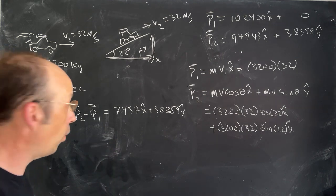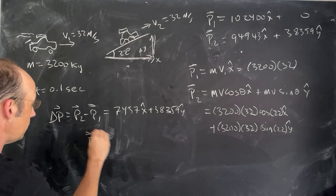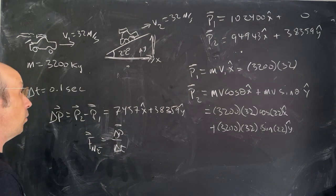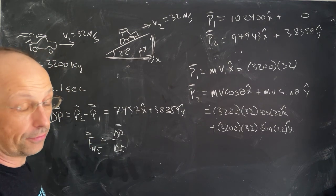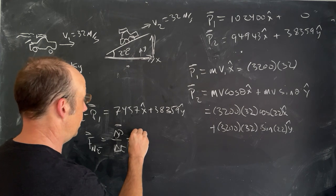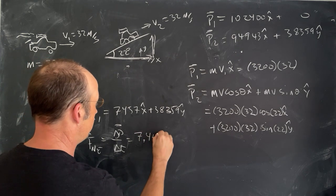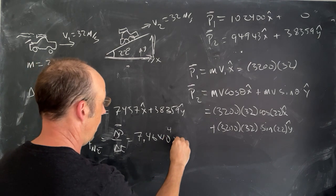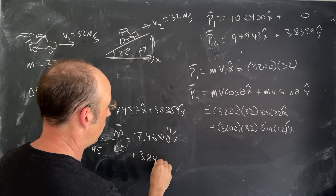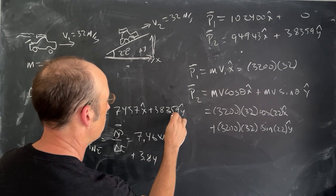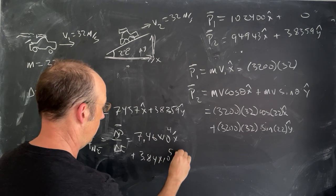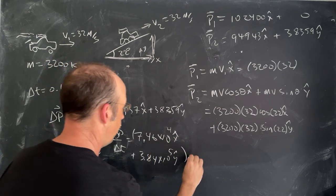Okay, now to find the force, the F-net, I'm just going to take delta P, and I'm going to divide by delta T of 0.01. So, dividing by 0.1, I can just multiply all these by 10. So, that's not too hard. It's going to be, I'm going to write it as a scientific notation now. 7.46 times 10 to the 4th x-hat, plus 3.84 times 10 to the 5th y-hat. And that is in newtons. So, that's my force.